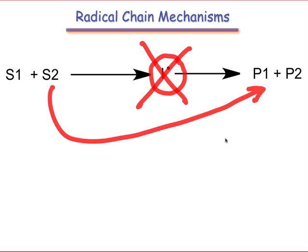And yet, how is it that full equivalence of S1 and S2 can be transformed to products without the essentially stoichiometric generation of radicals?